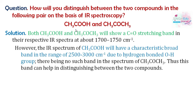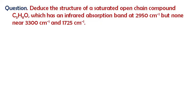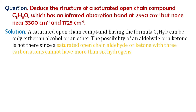Next is how to deduce a structure. In the exam, a formula C3H8O is given with an infrared absorption band at 2950 cm⁻¹. There are no bands at 3300 cm⁻¹ or 1725 cm⁻¹. This is a saturated open-chain structure, and it suggests either an alcohol or an ether. An aldehyde or ketone is ruled out because there is saturation.